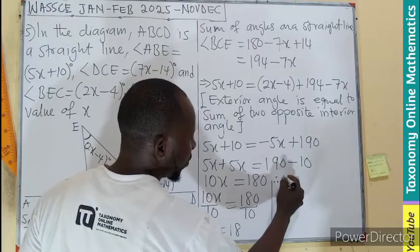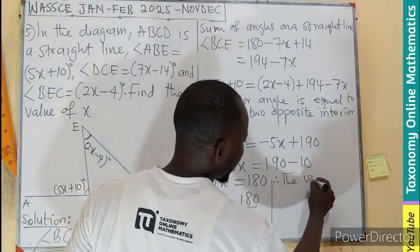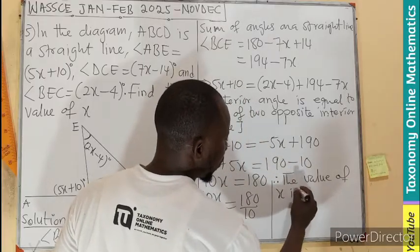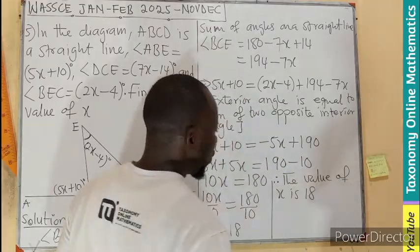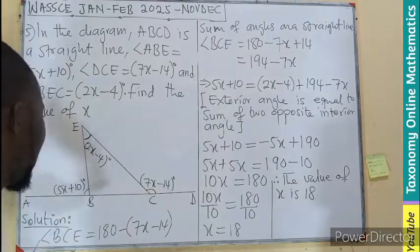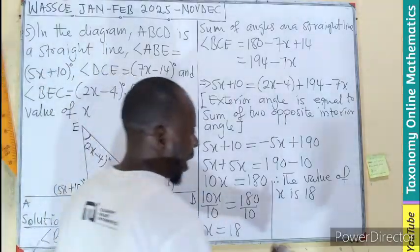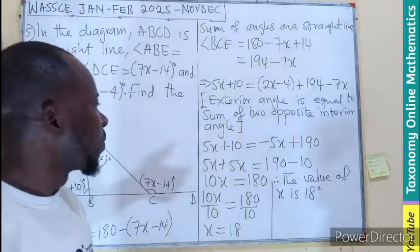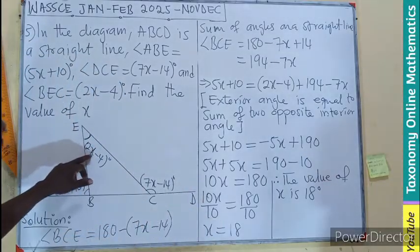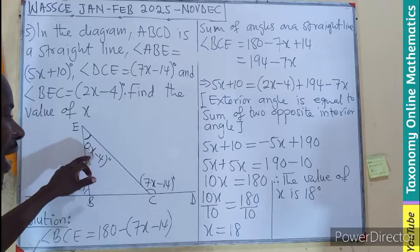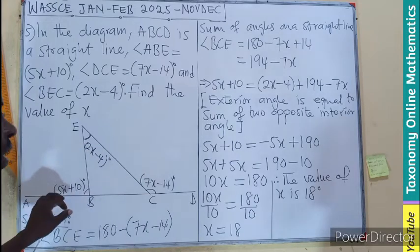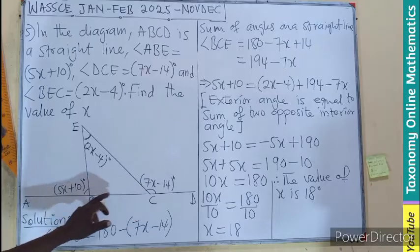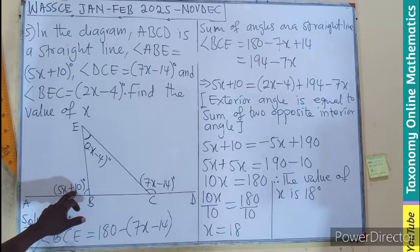Therefore, we can see that the value of x, if we are to add angle property to it, will be 18 degrees. So it means that when you replace the x by 18 in all cases, the sum of these two angles, when you add them, it will give you the value of the angle outside here.